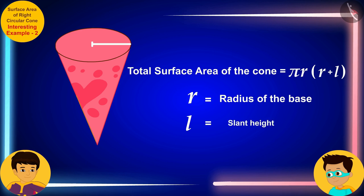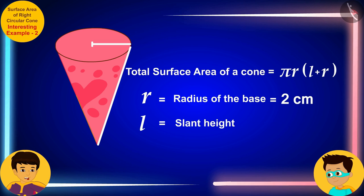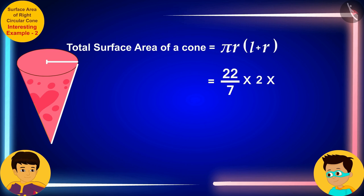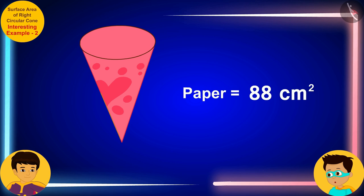The radius of the ice cream base is 2 centimeters and its slant height is 12 centimeters. Let me solve this by writing these measures here instead of r and l respectively. Look Manas, the cone has a total surface area of 88 square centimeters. This means 88 square centimeters of paper has been used to cover the ice cream completely.